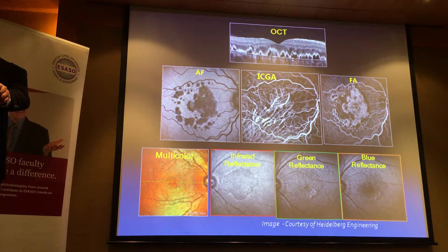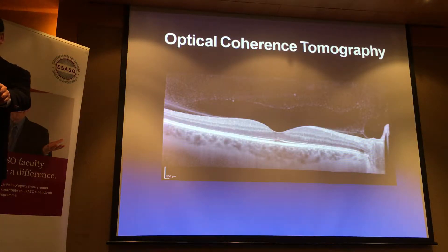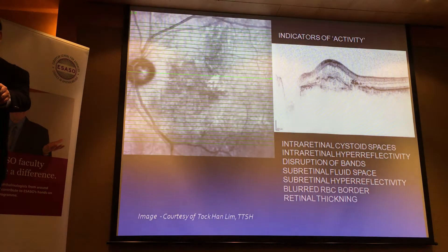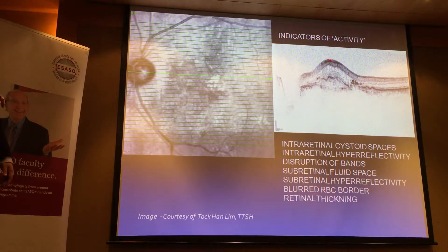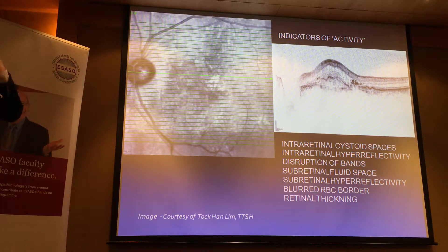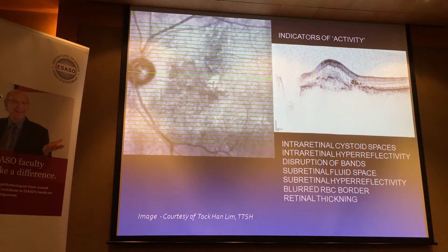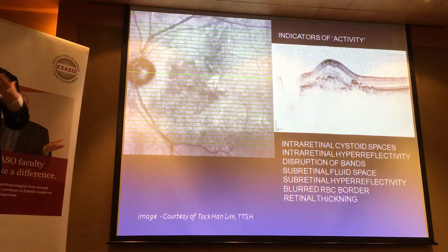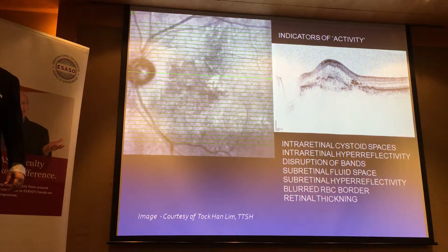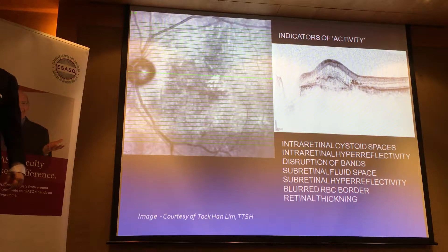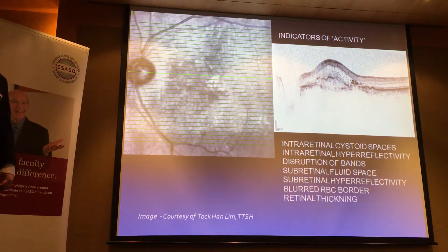So OCT — we know this already. When you do an OCT scan, you want to look at the qualitative scans, but also think actively about what you're looking for. Are there cystic spaces? Is there any hyper-reflectivity? Are the layers of the retina disrupted? Is there sub-retinal fluid? Many of these things can be seen on the OCT.